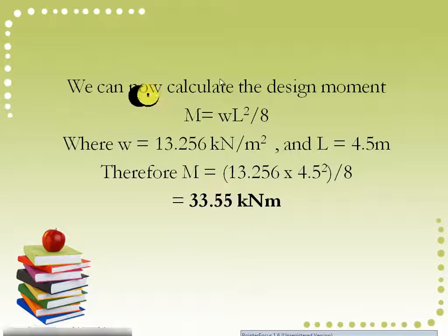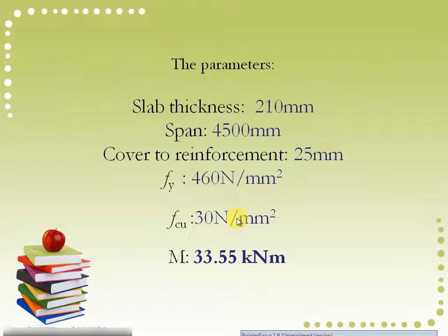We can now calculate the design moment. The formula for calculating the design moment of a simply supported span is wl²/8 where w equals 13.256 kN/m² and the span is 4.5 meters. Therefore, our moment is 13.256 times 4.5² divided by 8 which gives us 33.55 kNm/m.